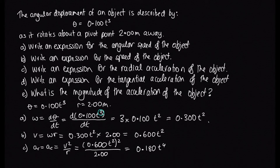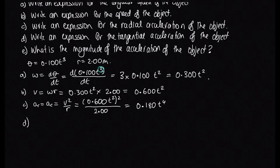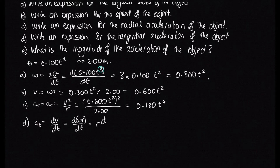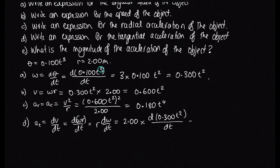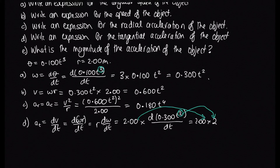Part D asks for the tangential acceleration, which equals dv/dt = d(ωr)/dt = r·dω/dt. With r = 2 and ω = 0.300t², differentiating gives 2 × 0.300 × 2t = 2 × 0.600t = 1.20t. So the tangential acceleration is 1.20t.